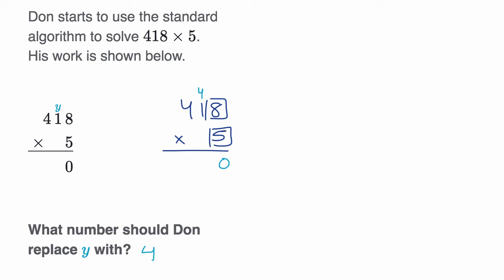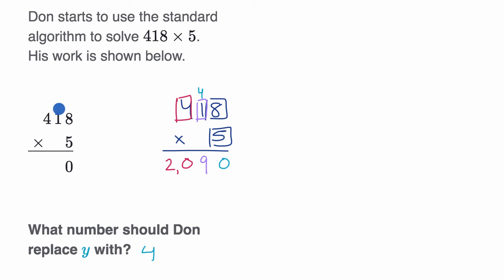Of course, you could keep going with this computation. If Don were then to say one ten times five, that'd be five tens plus another four tens — that's nine tens. And then last but not least, four hundreds times five is 20 hundreds, which you can express as zero hundreds and two thousands. But they're not asking us to do the entire computation — we're just figuring out what Don did in the first step. What number should he have written instead of y? Y is replaced with four, representing four tens.